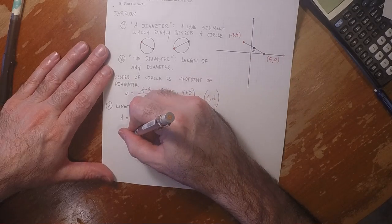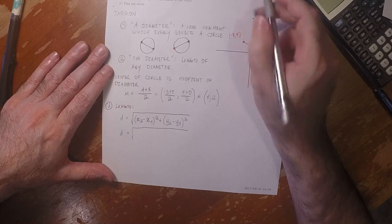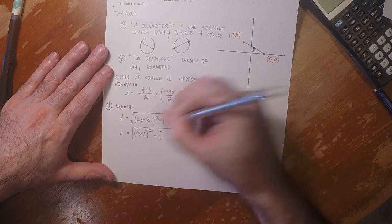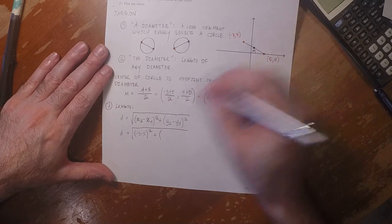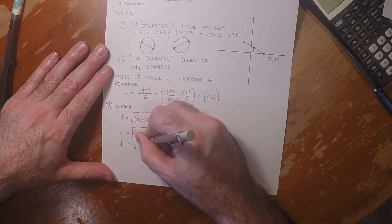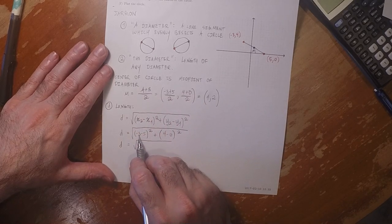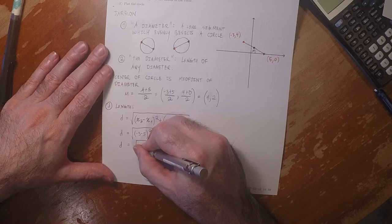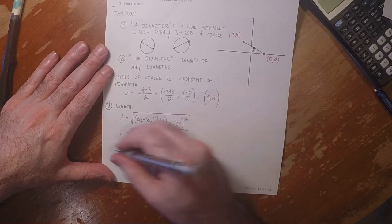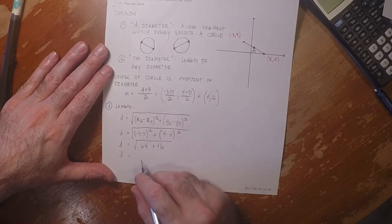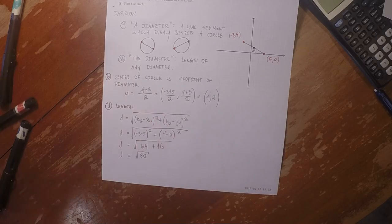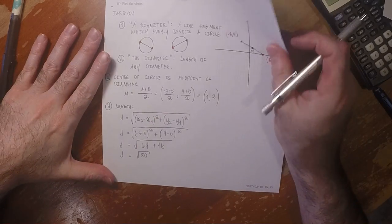So that is the square root of, well, negative three minus five. That would be square root of, well that's negative eight, but then squared, that would be 64. And that's four, and four squared is 16. So that's the square root of 80. That's the exact answer, and I don't want a numerical approximation.